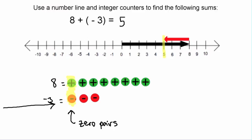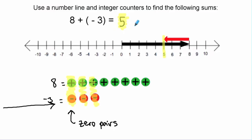I'm going to highlight all of my zero pairs. Here's one, here's a second, and here is a third. The tiles that are remaining are the sum of this pile of integer counters. In this case I have one, two, three, four, five positive tiles remaining. And yes, that is what we said we had earlier from our number line — the value of positive five.